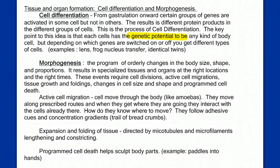We'll discuss specific examples of differentiation in class. Once we have different cell types, we need to address morphogenesis — the change of shape. Cells must arrange in an orderly pattern of changes in size, shape, and proportion to create the actual body of the embryo from a ball of cells, resulting in specialized tissues and organs at the right locations at the right times. This requires cell divisions, active cell migrations, tissue growth and folding, changes in cell size and shape, and programmed cell death.